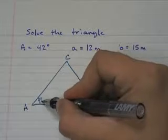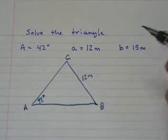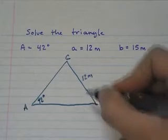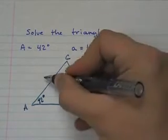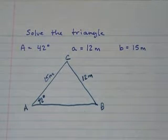Angle A is 42 degrees, side a is across from that is 12 meters, angle B is unknown, side b is 15 meters, and side c and angle C are unknown.